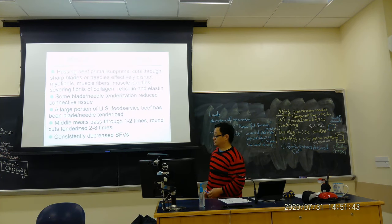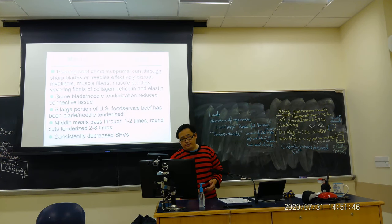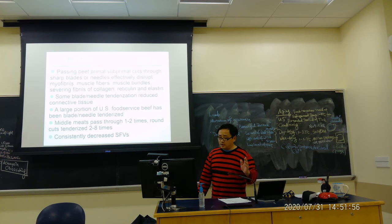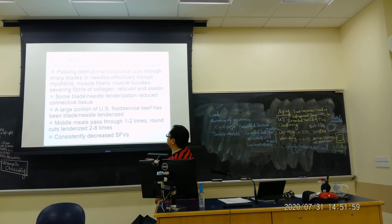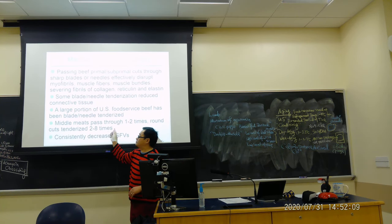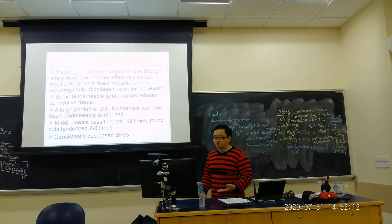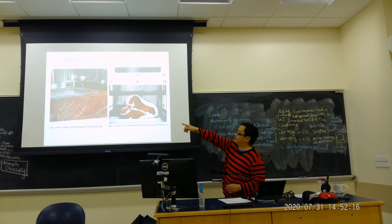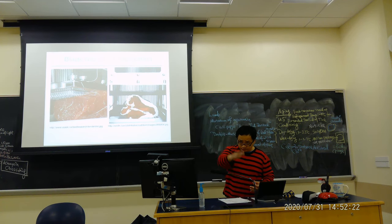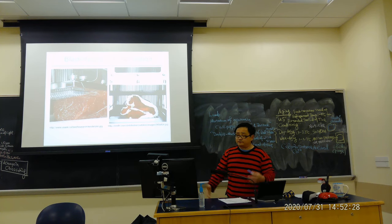Another easy method is to use blades or needles to physically disrupt the muscle fibers, collagen, and other proteins. About 50% of United States food service beef undergoes blade and needle tenderization. Passing through one to two times can make the meat two to eight times more tender, dramatically decreasing the shear force value. You can even buy a portable unit for about fifty dollars.